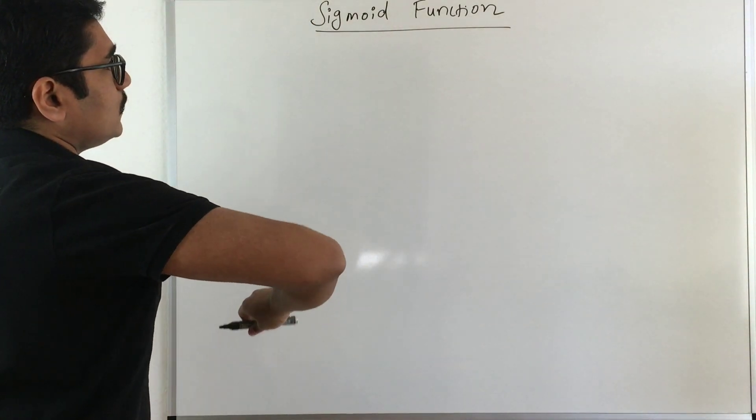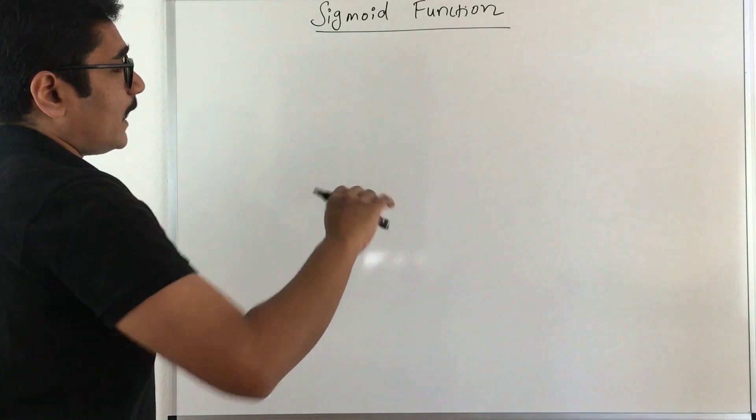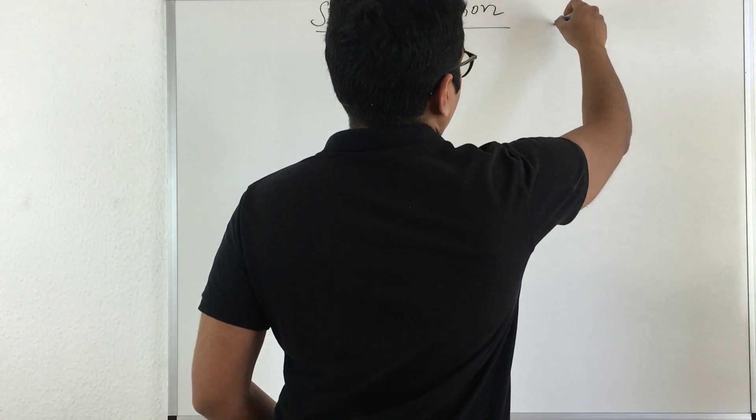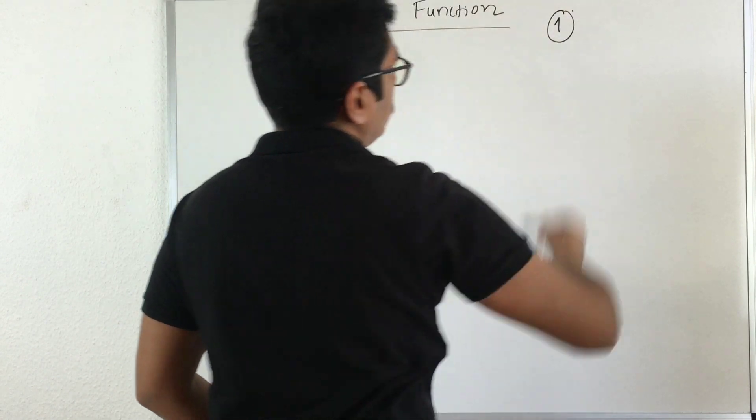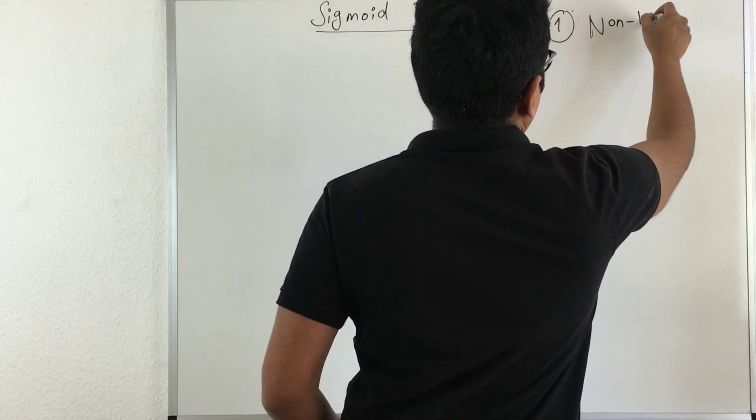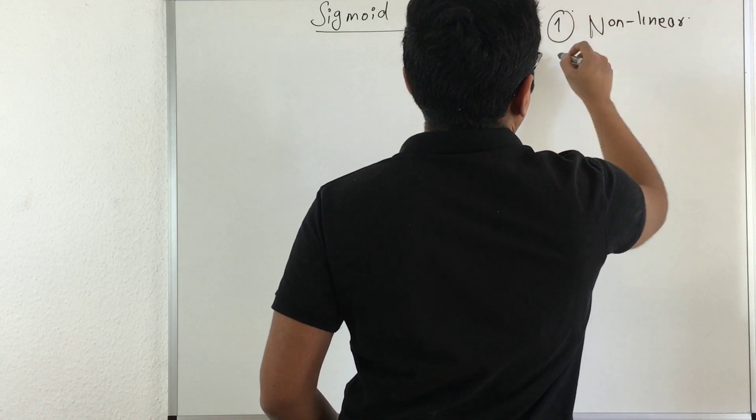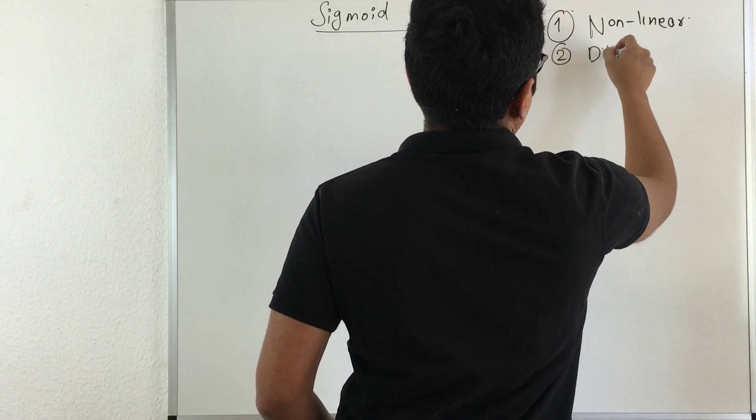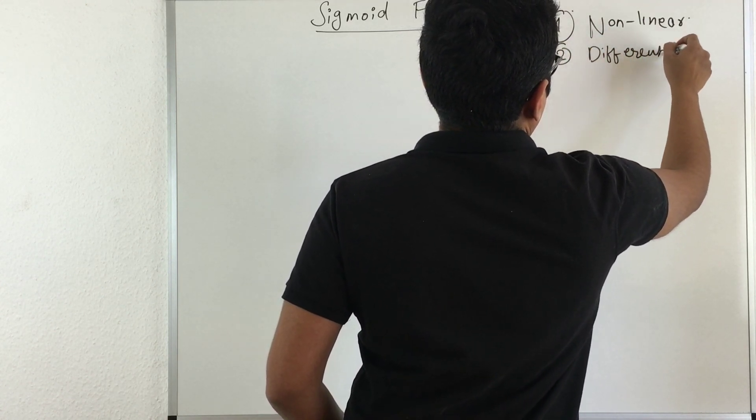We essentially start with the properties we've seen in activation functions. In order for a function to be applicable at the nonlinear part, first it should have a nonlinear nature or nonlinearity, and second it should be differentiable.